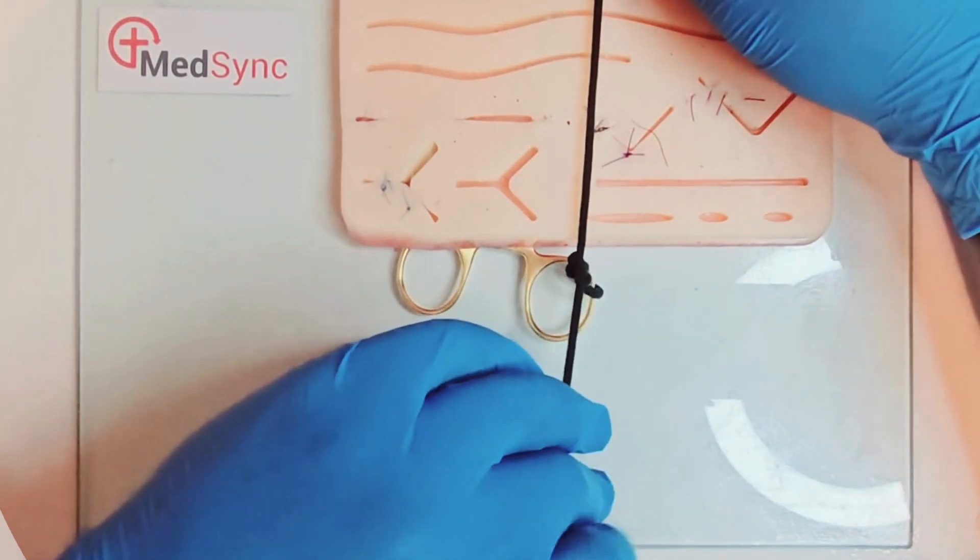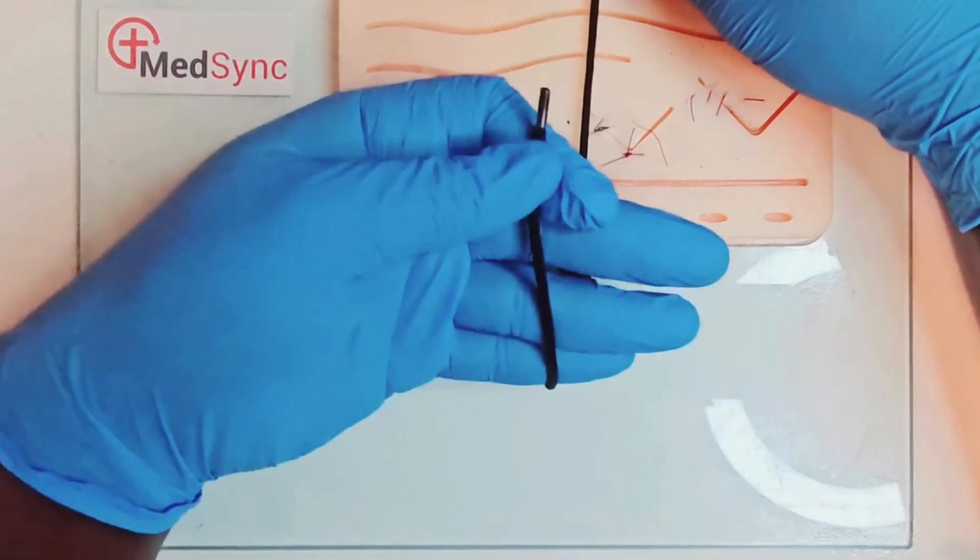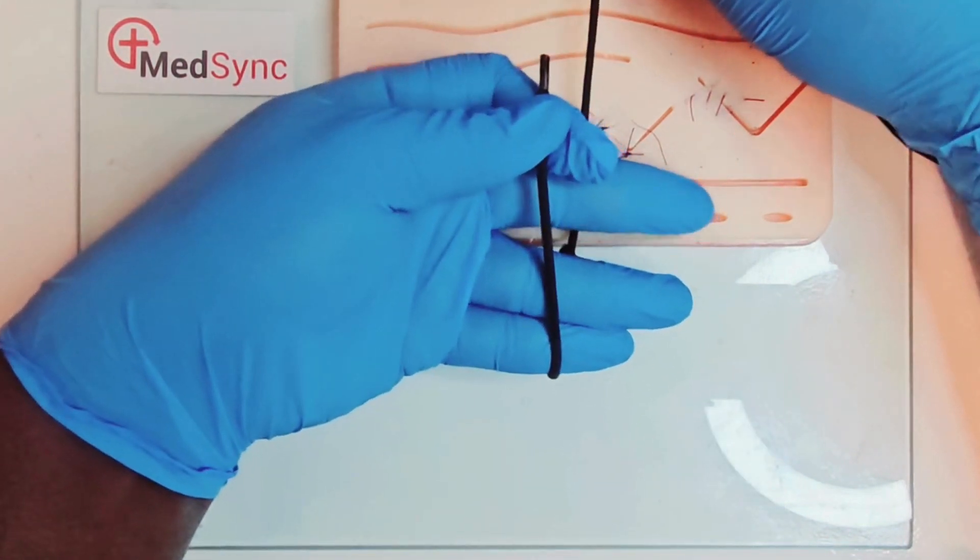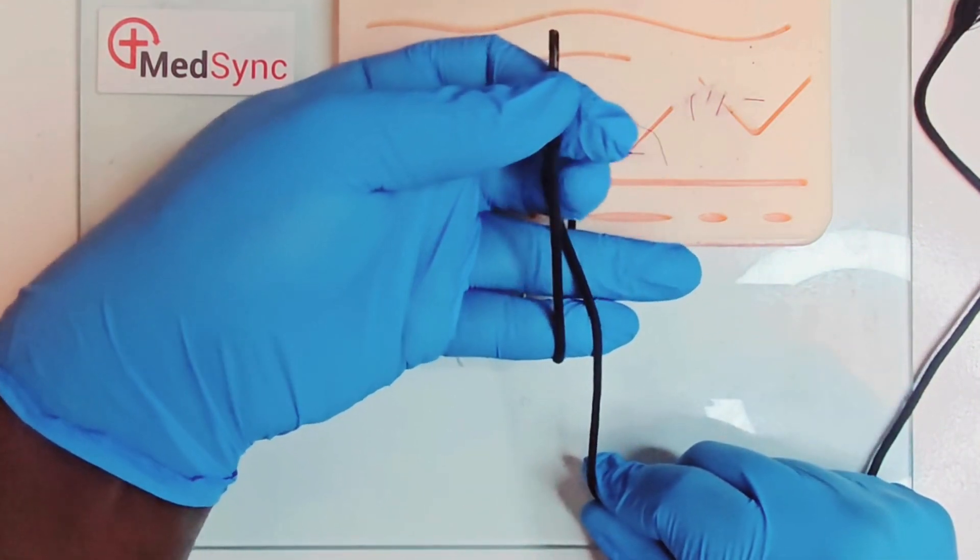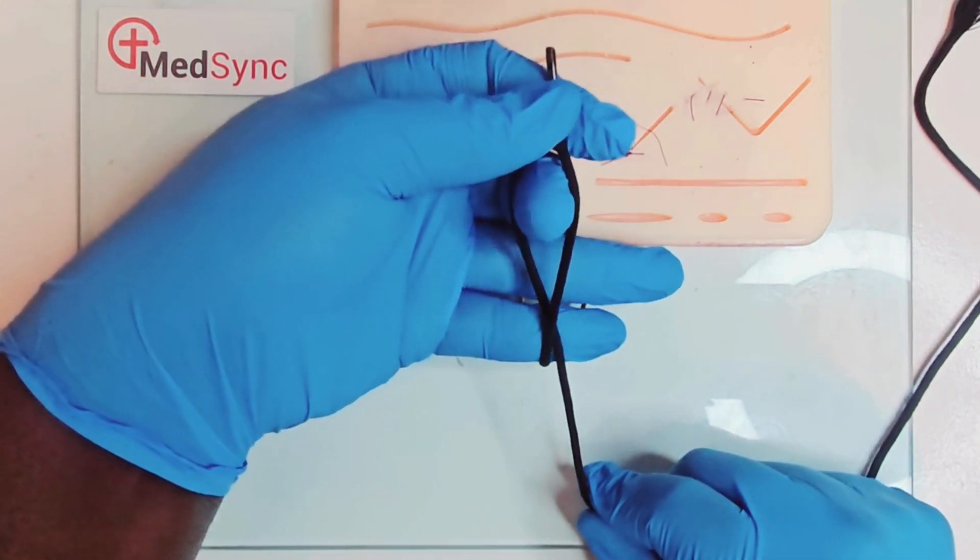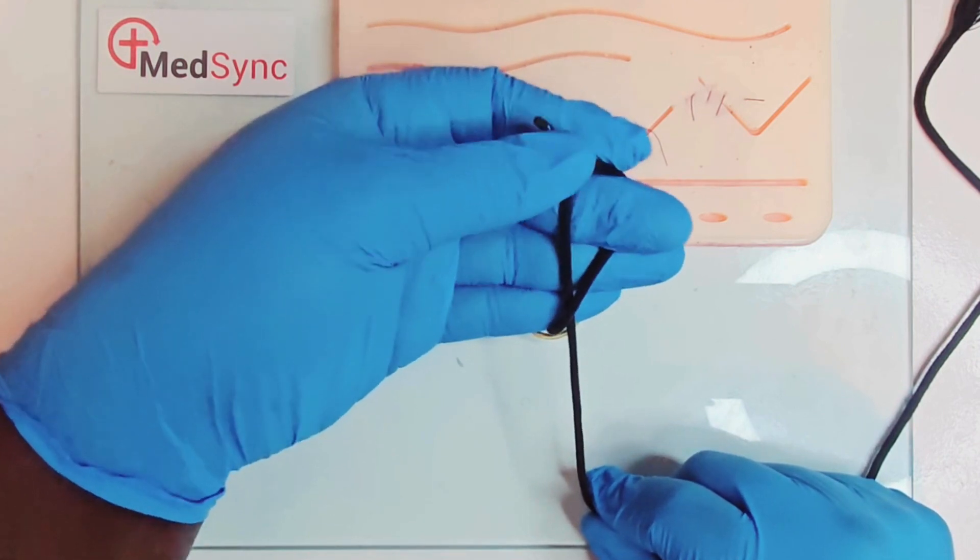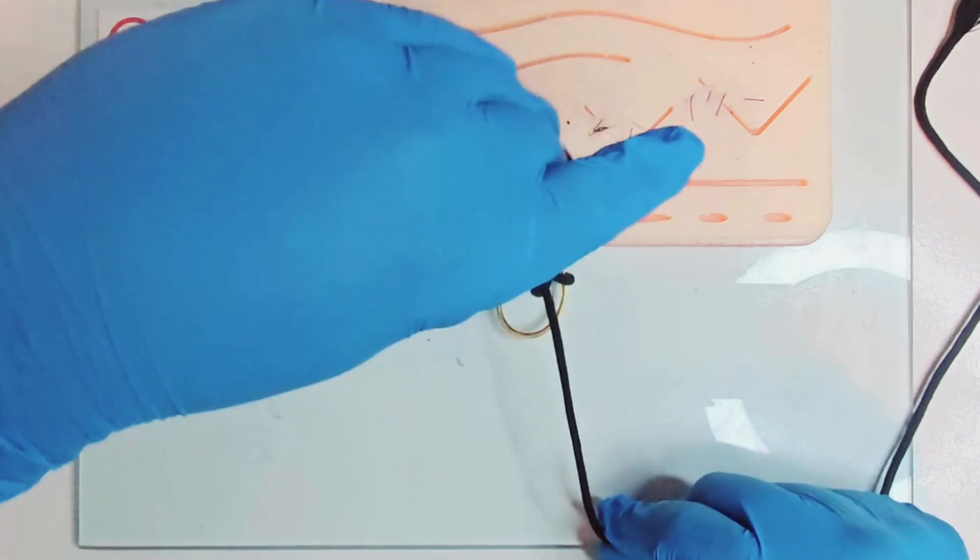Grasp the short thread between index and thumb. Turn your palm up. With the short thread running up, run the long thread down your left palm. Flex the middle finger. Squeeze the short thread between middle and ring. Release the pincers and pull the short thread away from you.